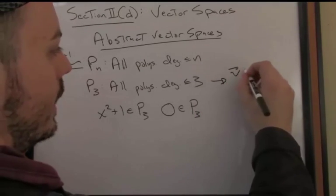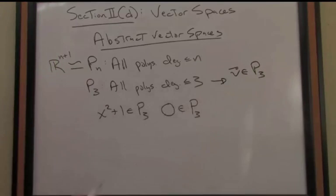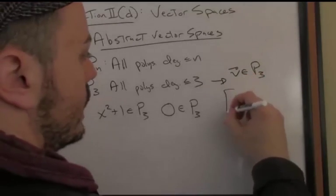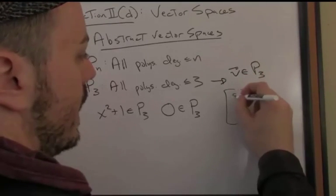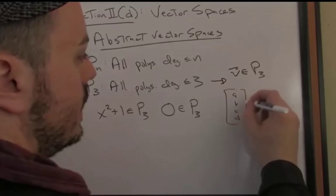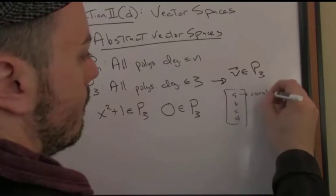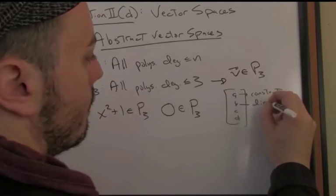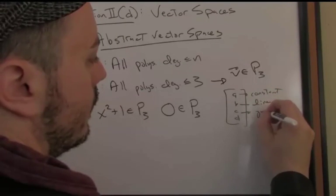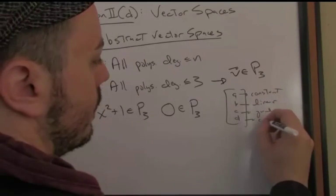For P3 then, a vector, just means a polynomial in this case, a vector in P3 has how many slots to fill? It has A, B, C, and D. It has a constant term, the linear term, the quadratic term, and the cubic term, as I just said.